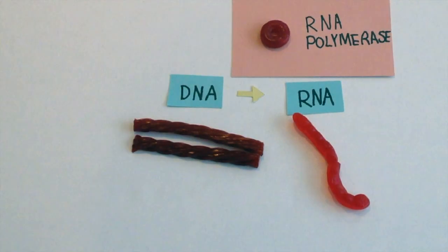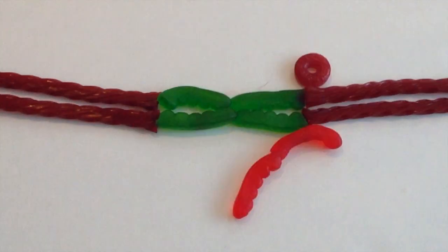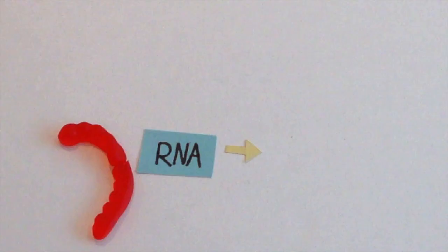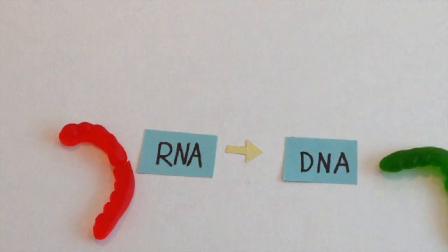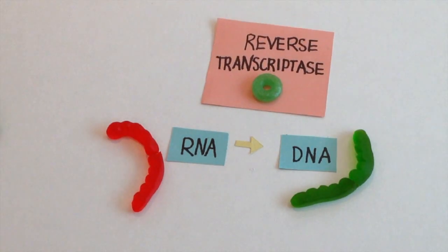The retrotransposon gets the help of the enzyme RNA polymerase to be transcribed, or copied, into RNA. But the problem is, if the retrotransposon is to be inserted into a new region of DNA, it can't be in RNA — it needs to be in DNA. So the RNA is reverse transcribed into DNA using reverse transcriptase.